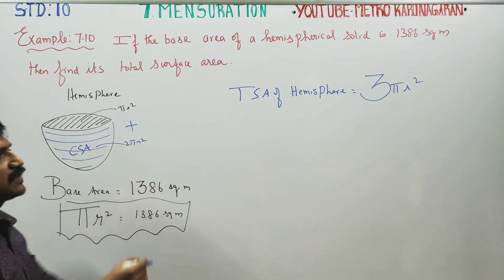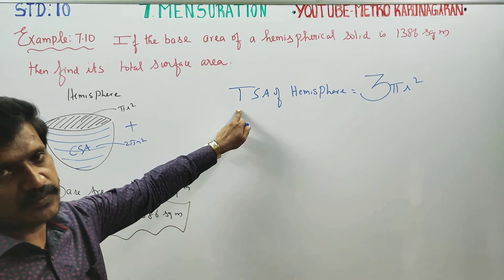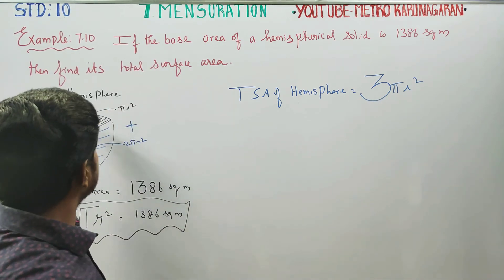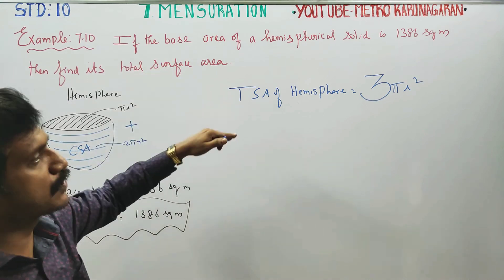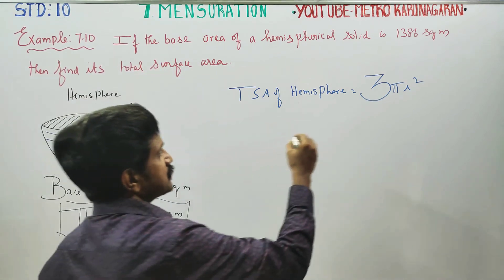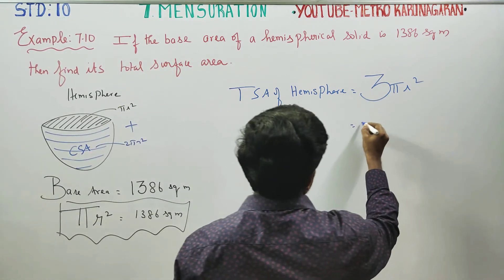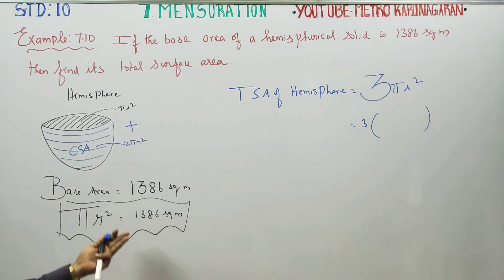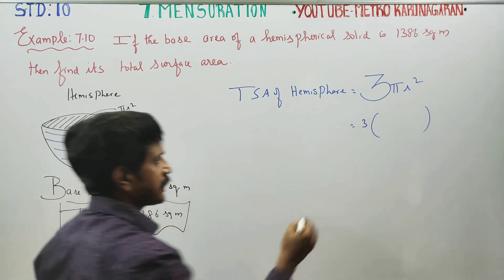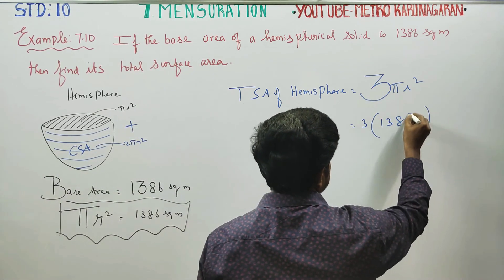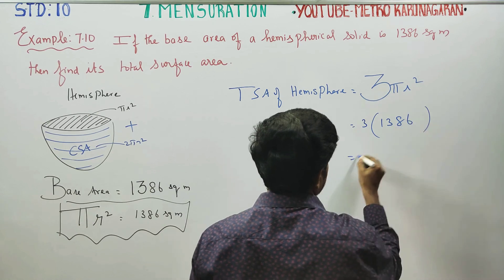Adding these together gives us 3 pi r square, which is the total surface area formula for a hemisphere. Now we substitute the known base area value of 1386 into the formula: TSA equals 3 times pi r square equals 3 times 1386.